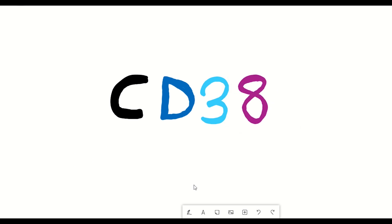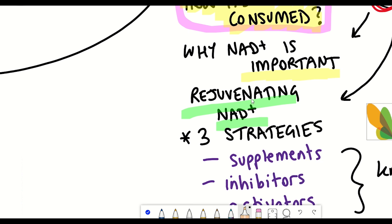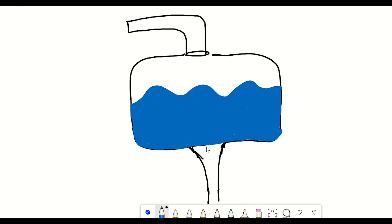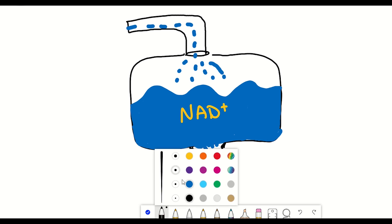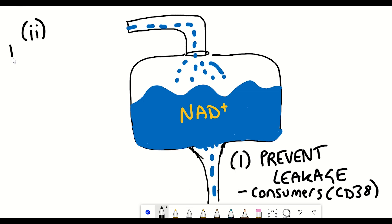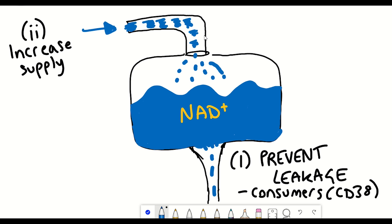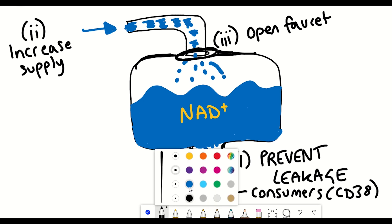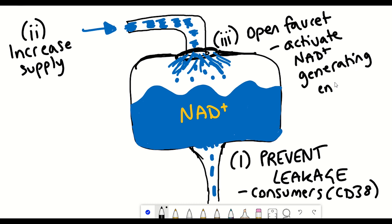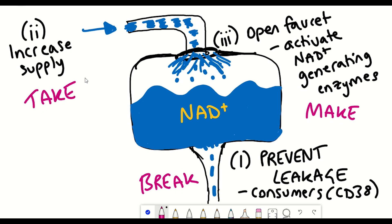The more important question is: what strategies exist to increase NAD+ levels? Using the analogy of water in a sink, there are three main ways to maintain water levels. First, prevent leakages — representing inhibiting the enzymes that consume NAD+, such as CD38. Second, increase the supply of water — that is, providing precursors to NAD+. Third, open the faucet to allow a stronger flow — activating enzymes involved in NAD+ generation. Or as I like to think of it: the make, break, or take strategies to prevent NAD+ decline.